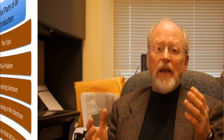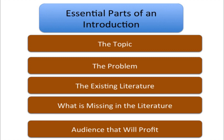If you look at a typical introduction in a good journal article, you'll see a template for how authors write it — they don't randomly present introductory comments. There's an actual structure. I call it a social science deficiencies model, and it has five different parts: the topic, the problem, the existing literature, what's missing in the literature, and then the audience.